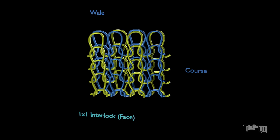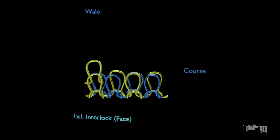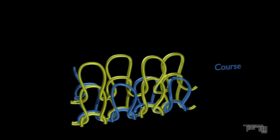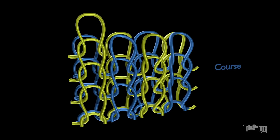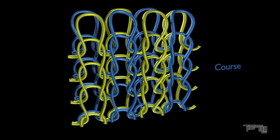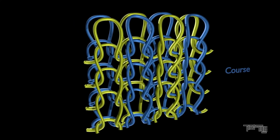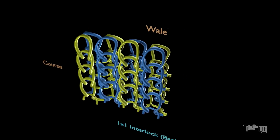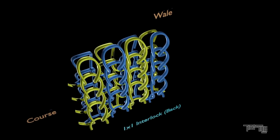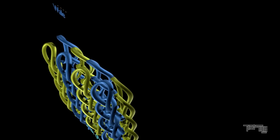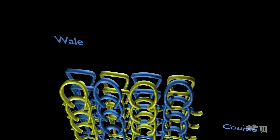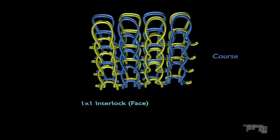Interlock is also a double jersey fabric, created by two sets of needles. It is a variation of rib fabric where two rib structures are interlaced with each other. If we see from the top, one course goes diagonally as in rib fabric, however the next course goes reverse diagonally. This creates each wale situated face to face, with two separate courses locked together, creating a thicker and heavier structure. The surface cannot be stretched out to reveal the reverse loop wales.